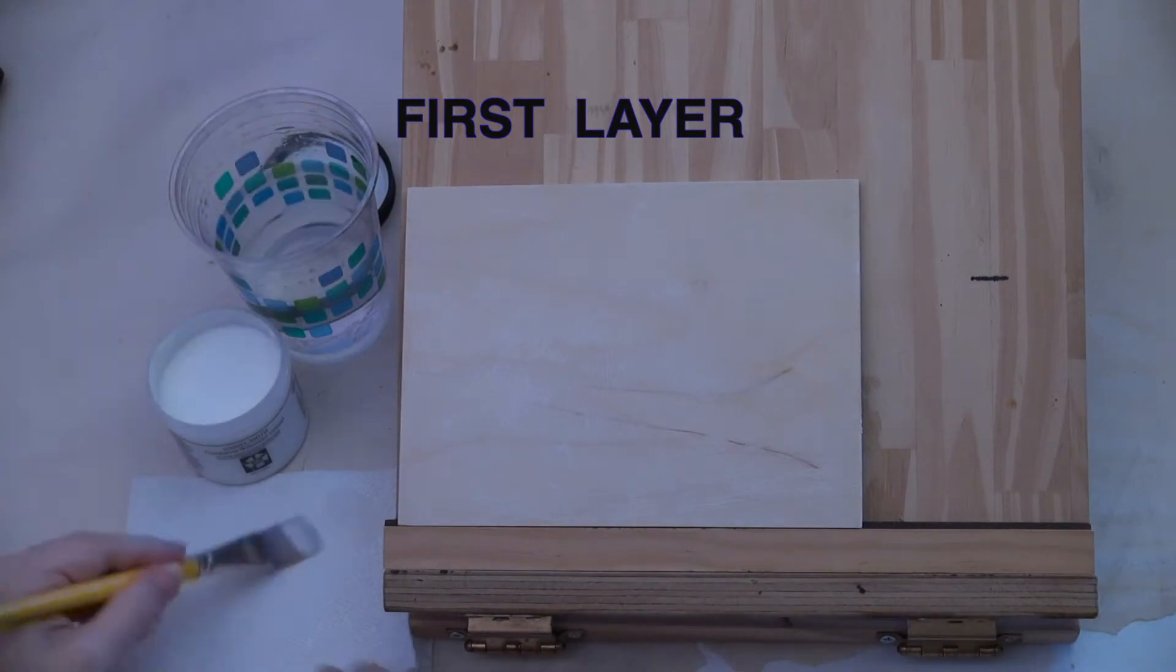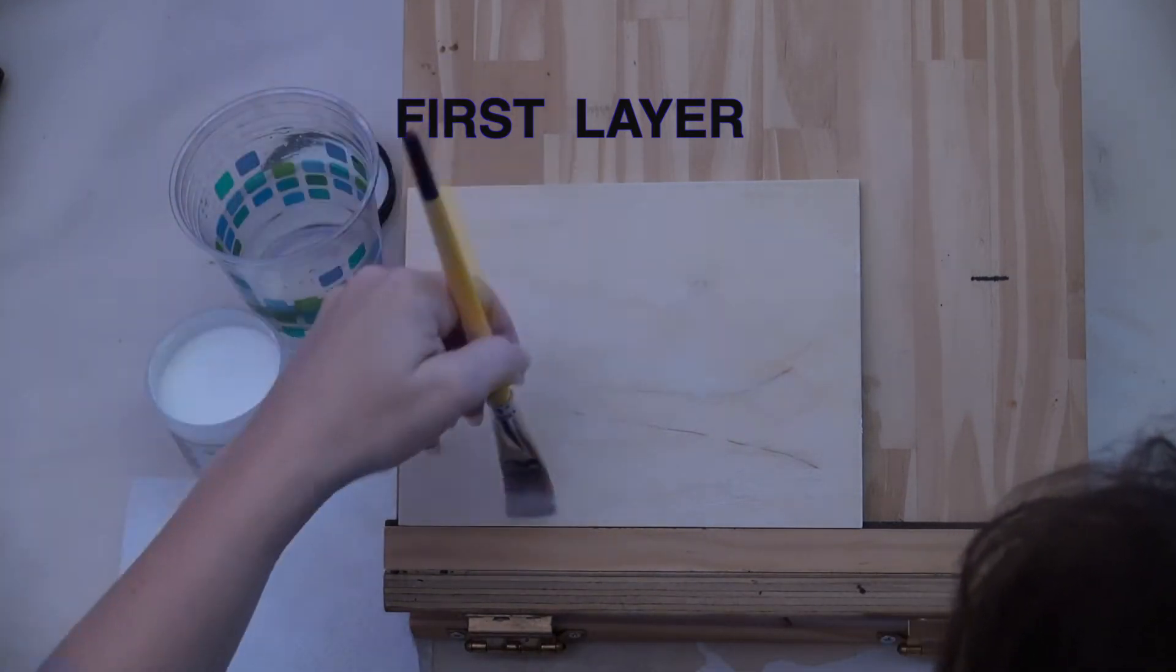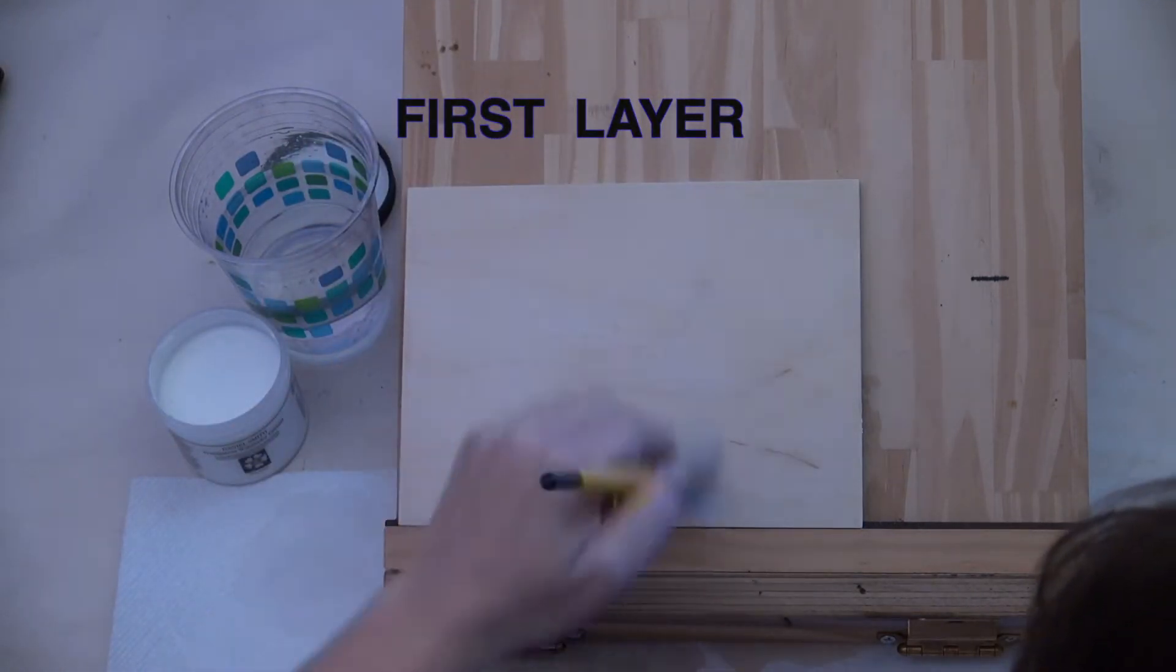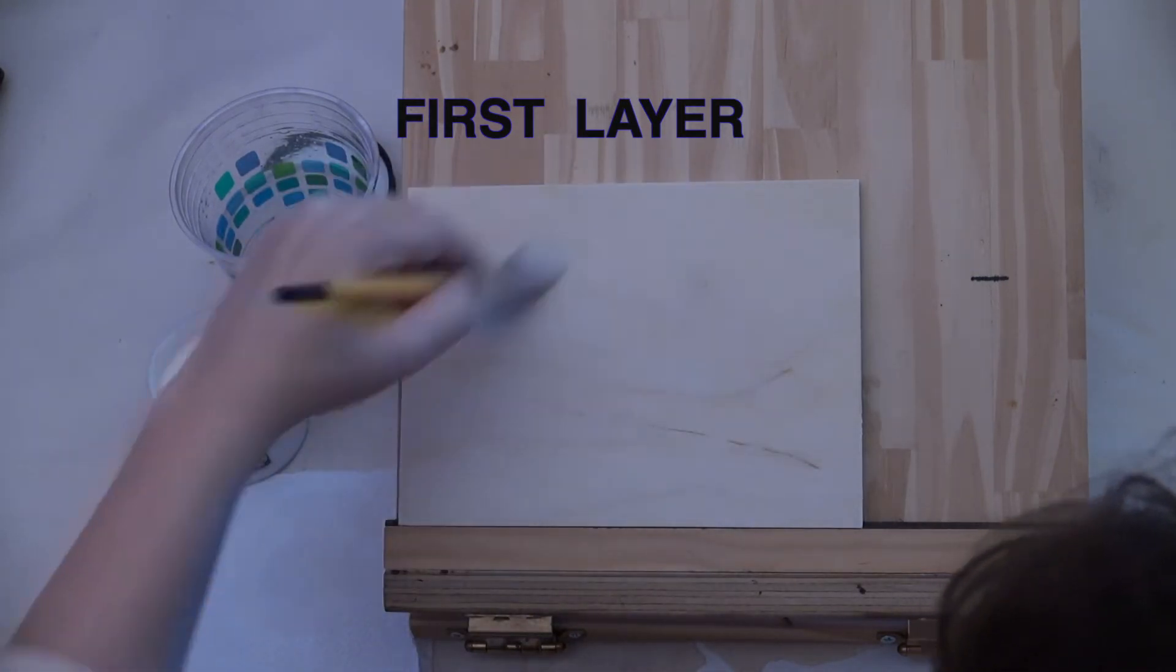Clean the brush of most of the grounds, blot the excess water, and brush the board again. Continue this process until the grounds look fairly uniform on the board and you don't see any clumps.